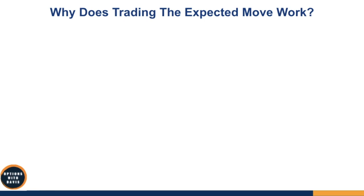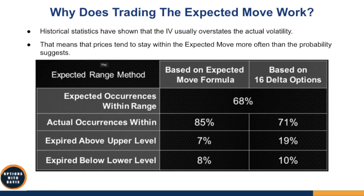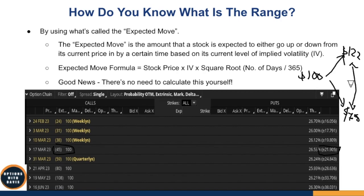So why does trading the expected move work? This is backed up by a lot of statistics. Historical statistics have shown that implied volatility usually overstates the actual volatility. That means prices tend to stay within the expected move more often than the probability suggests. For example, based on implied volatility, there is a certain chance the market will stay within the expected range by expiration at 45 days. But the actual volatility could be much lesser — it could probably be $110 down to around $90, compared to the implied expected move range.